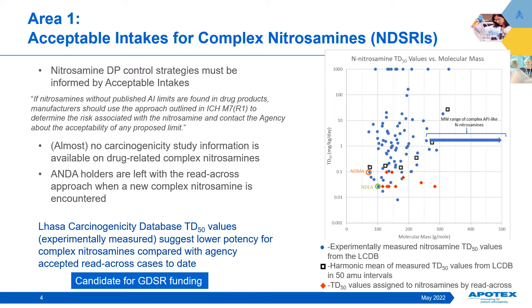Importantly, the reddish-orange diamonds plotted here are all the publicly available read-across established TD50s for nitrosamines since 2018. I will remind you that read-across TD50 values are not experimentally measured — they are hypotheses. If one considers especially those examples that appear at the higher molecular masses, they do not reflect the empirical data for TD50s when considered en masse. Further research into establishing alternatives to standard read-across is urgently needed for complex nitrosamines.